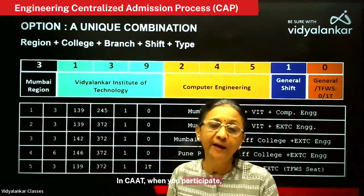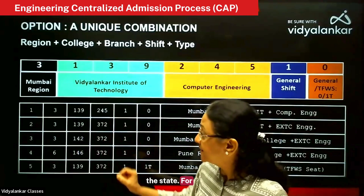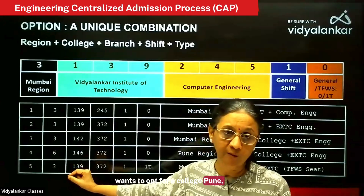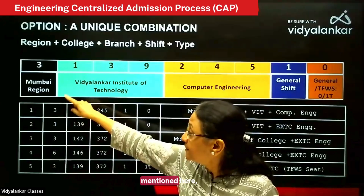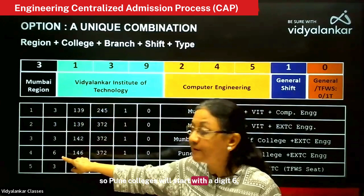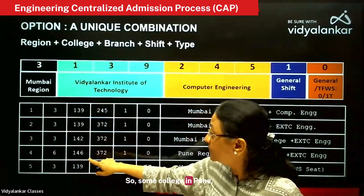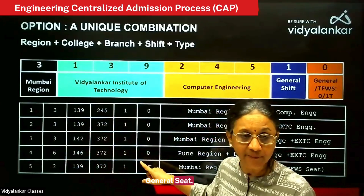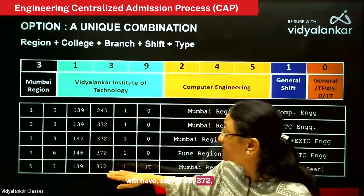In CAP, when you participate, you can opt for any college in the state. Say for example, a Mumbai student wants to opt for a college in Pune. Since the first digit is for the region, a college in Pune would have a different region code — so the option would be: some college in Pune, telecommunication, general shift, general seat. A student who is eligible for TFWS would fill say 3139-372 with general shift and applying for the seat under TFWS.